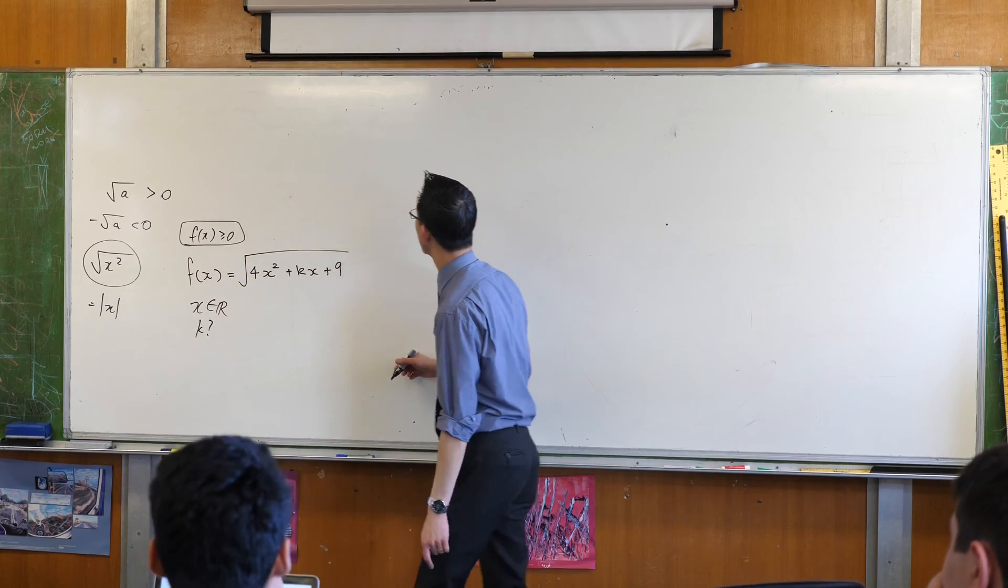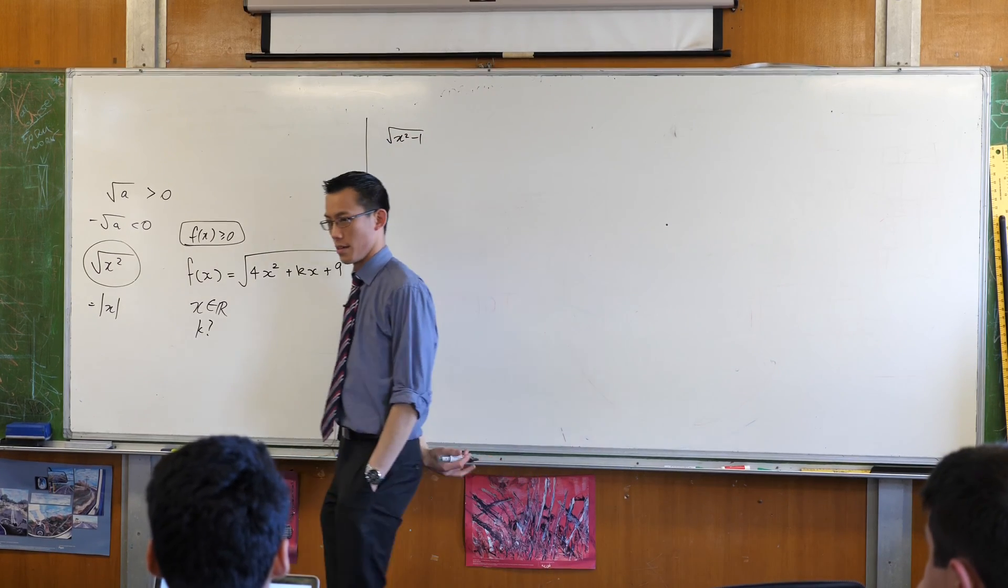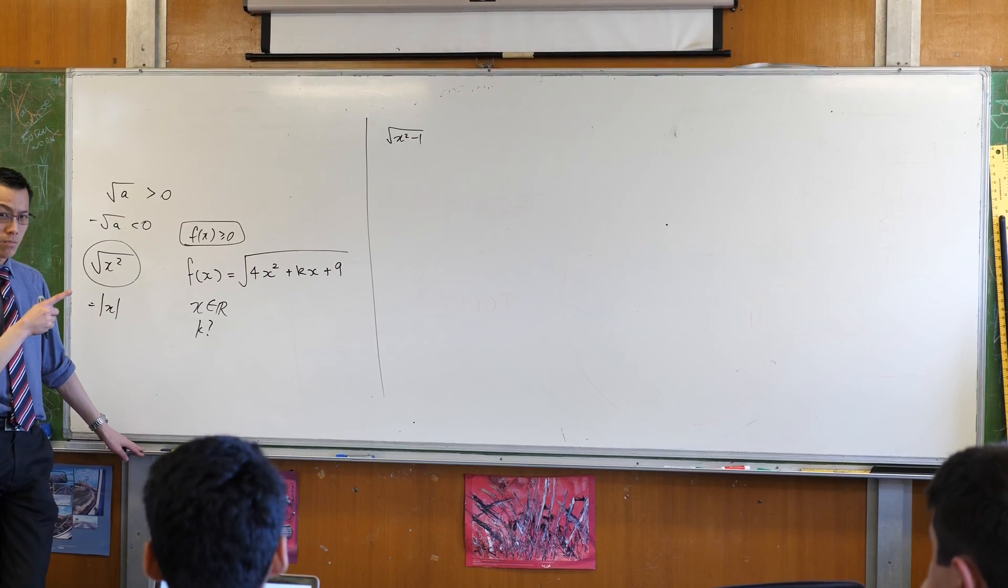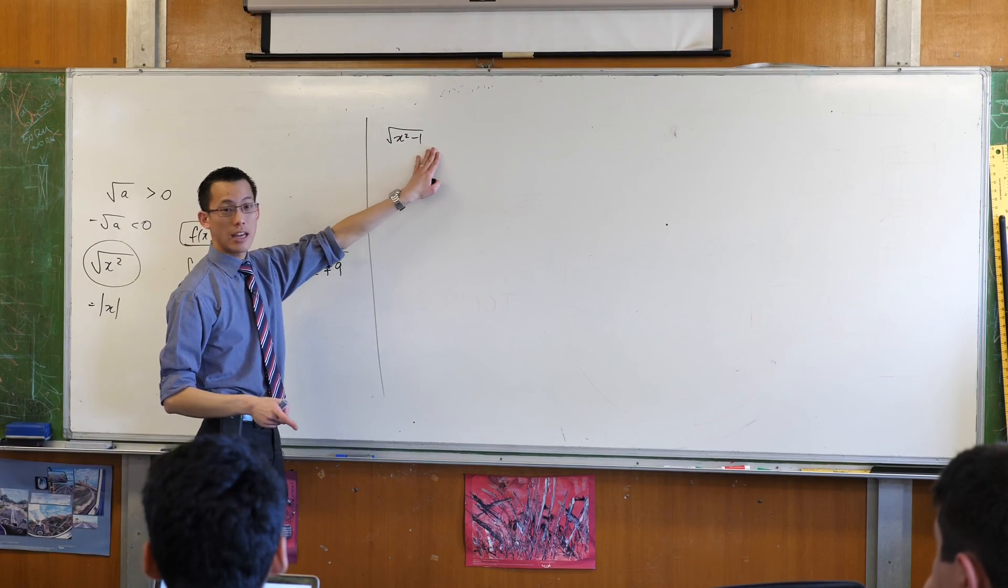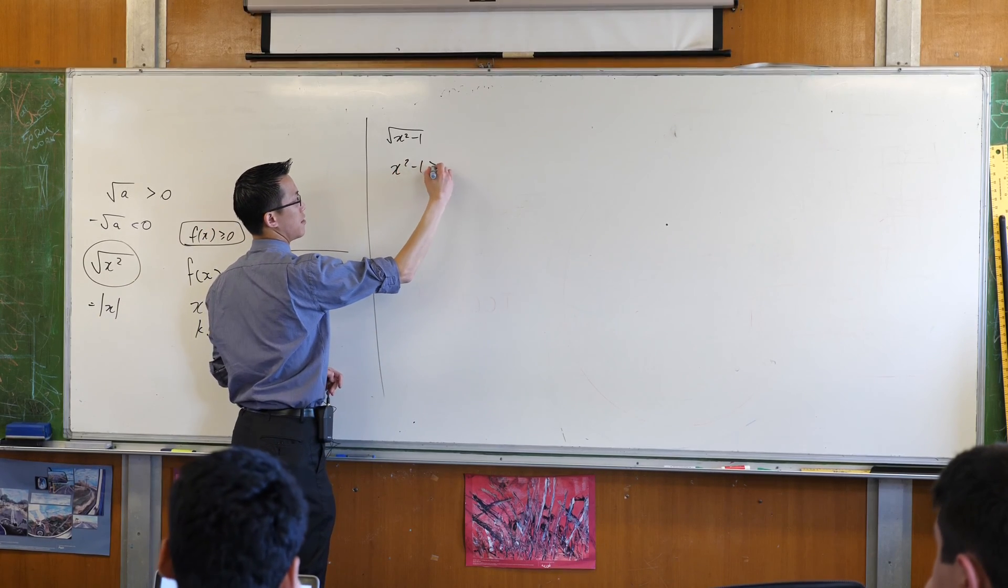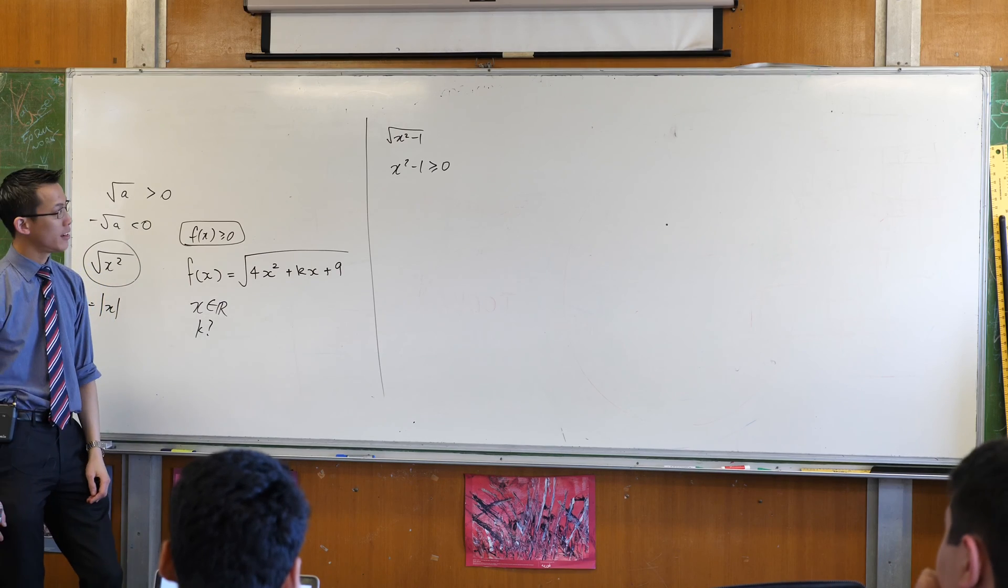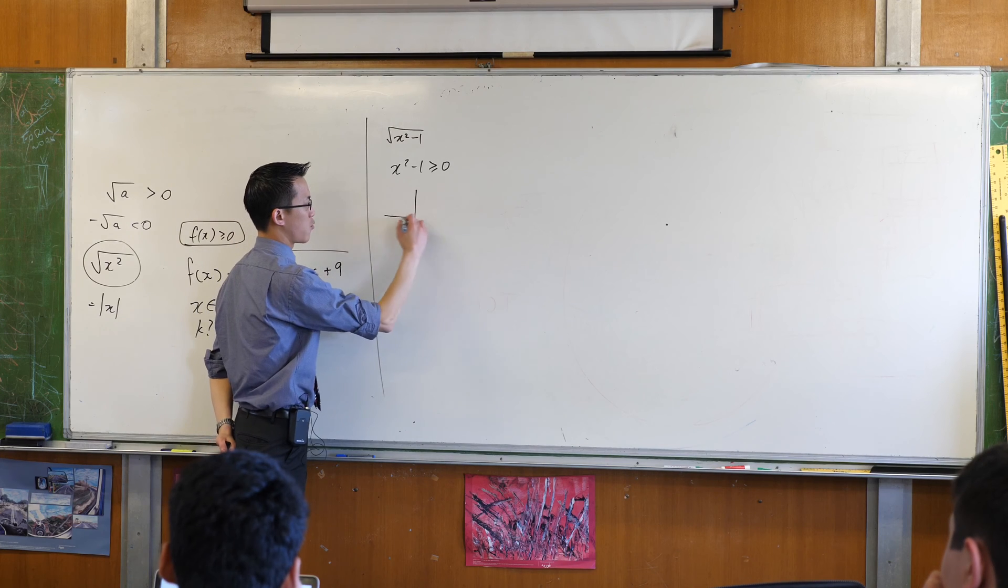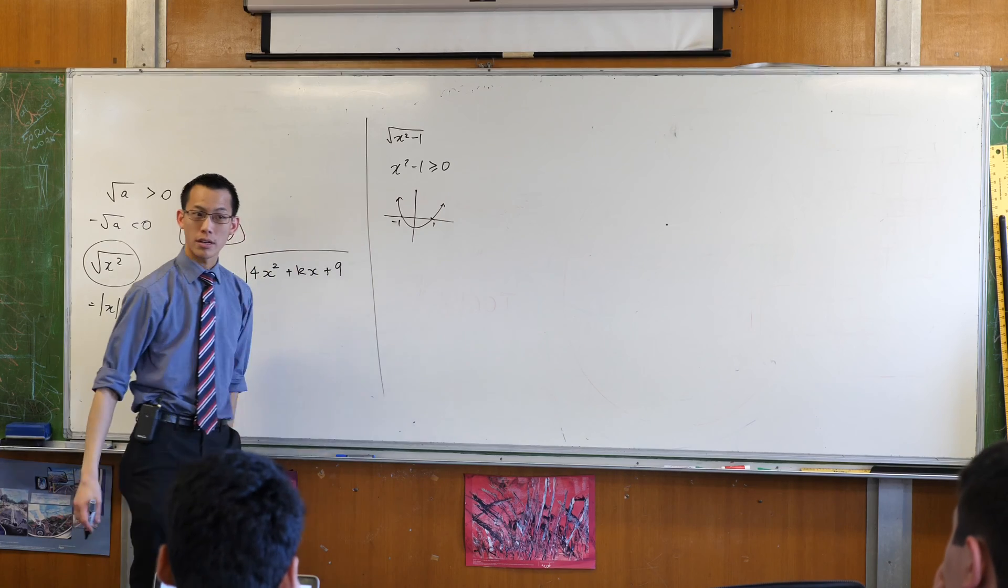But if I change this around a little bit, let's use this space over here. Let's try something like this. What is the domain of this? I need to make sure that everything underneath the square root is greater than or equal to zero. So if I solve this, that will give me the domain of this function here. As it happens, let's say that's x² - 1, so roughly it looks like this. So that's 1, that's -1.